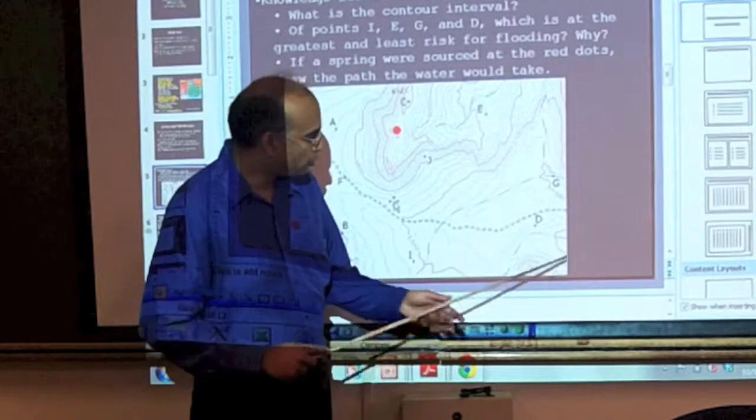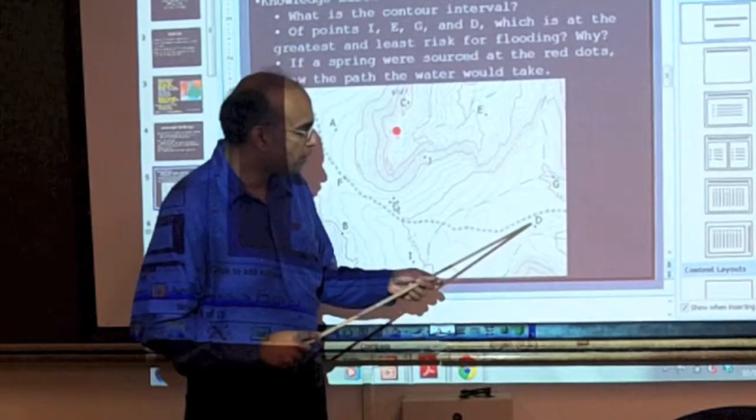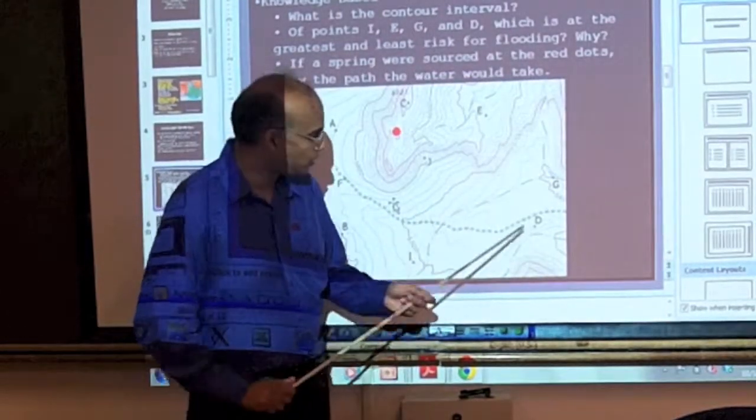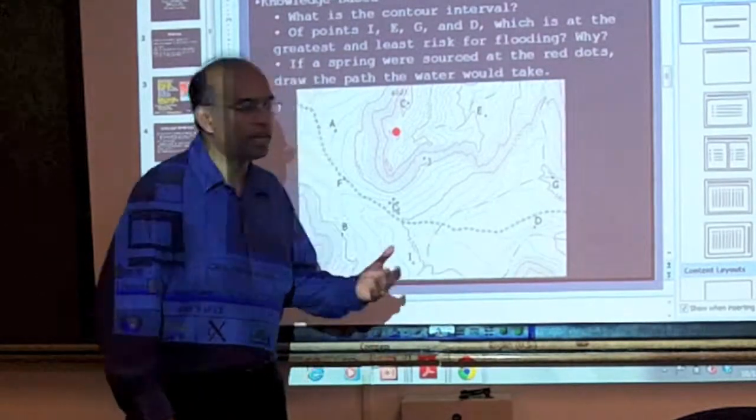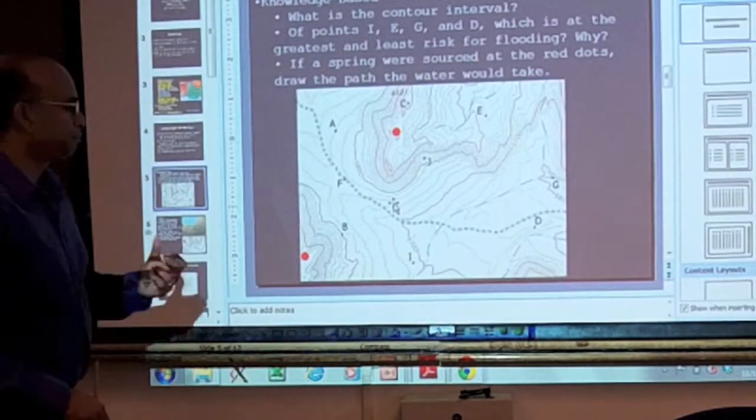D here is also very close to a stream, but if you look at it, you'll see that there's a couple of contours between it and the stream. So this is 60 feet above the stream and so it's going to be less prone to flooding.